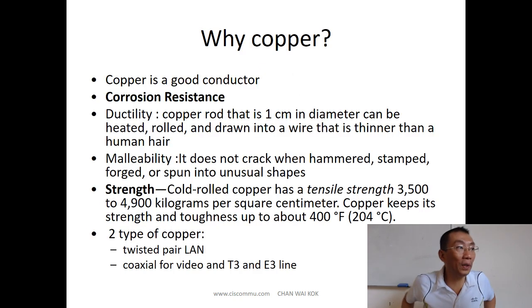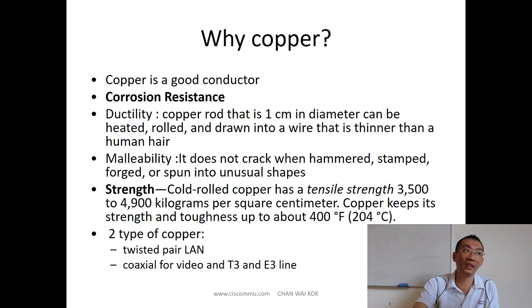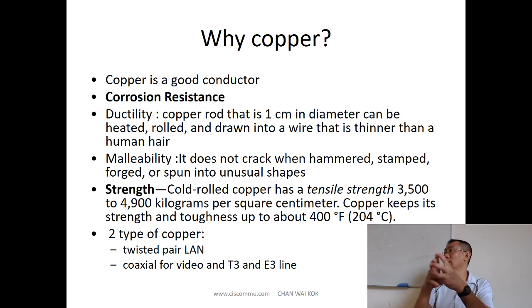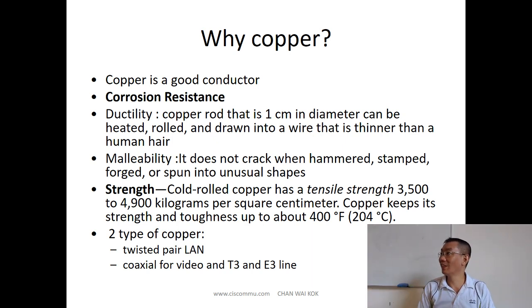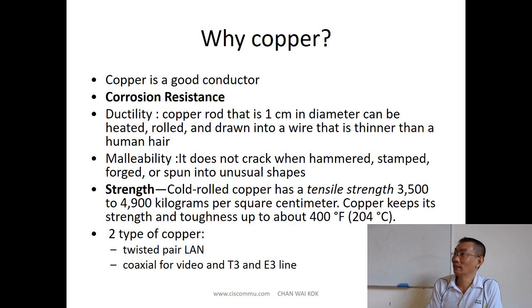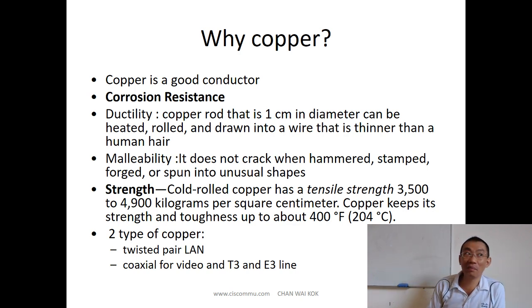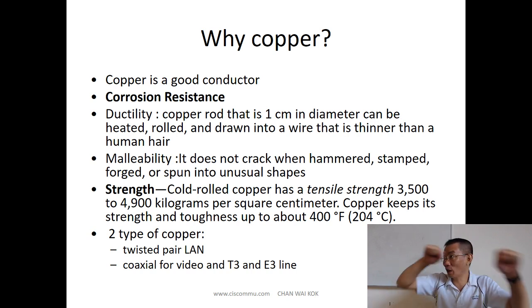Why do we use copper? First, it's a good conductor. Second, it's corrosion-resistant — very difficult to corrode compared to steel. Third, it has ductility — like a plaster or rubber band, you can stretch it into any form without breaking it. You can pull it very thin and long, which is good for making wires and fibers.